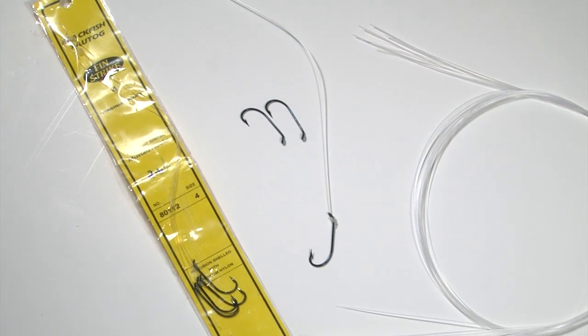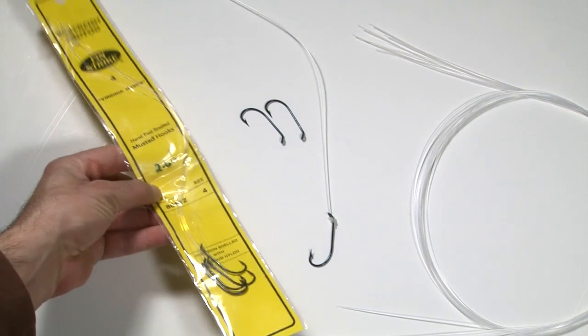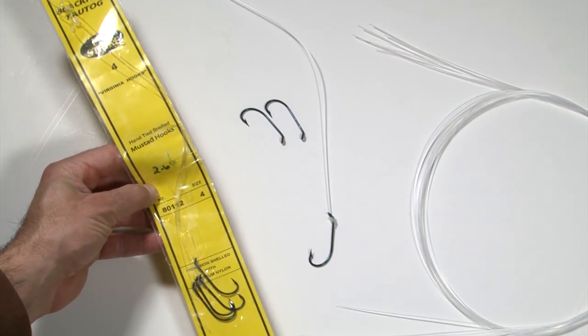Today I'm going to show you how to tie a pre-tied snell rig. These are the type of rigs you would buy for blackfish, fluke, even striped bass.